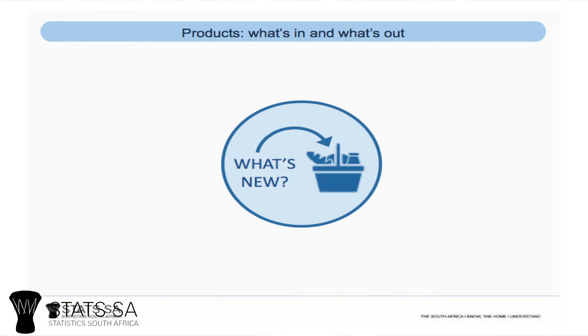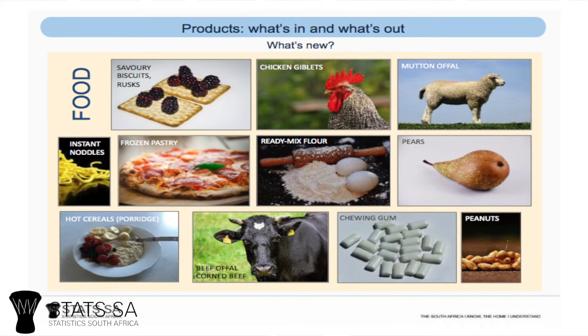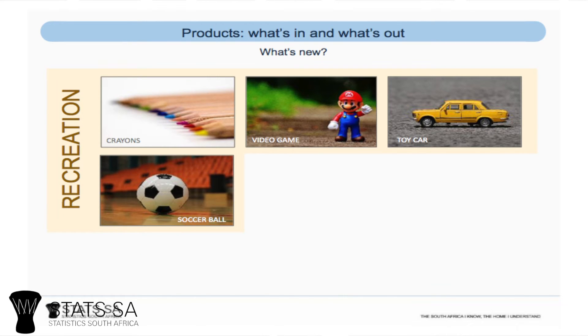Some of the items that have come into the basket this year are ready-mix flours such as muffin mix or pancake mix, frozen pastry products like frozen pizzas and pies, and instant noodles — reflecting a growing convenience lifestyle. We've also seen toys such as soccer balls and video games entering the basket. One very important addition is levies for sectional title developments: for the first time, people who live in townhouse complexes or estates and pay a levy will have those price increases reflected in the CPI. One interesting item that has fallen out of the basket is stamps, really reflecting that people no longer send letters.